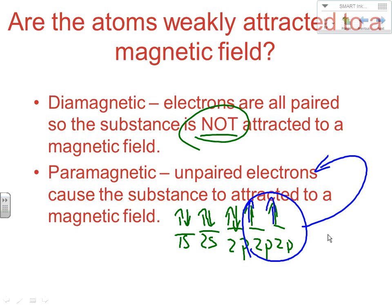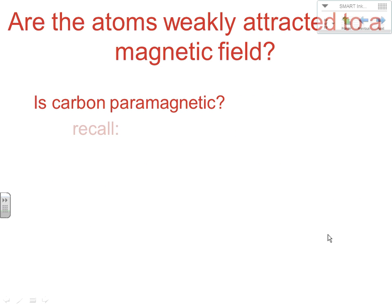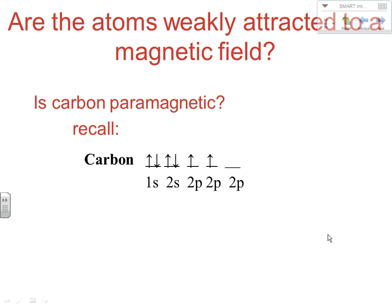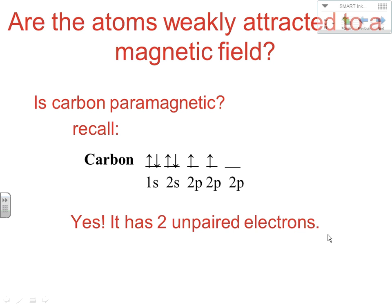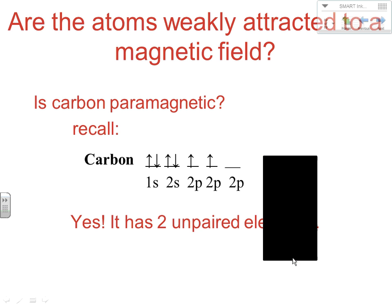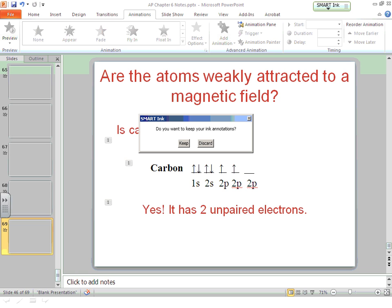How come some things are weakly attracted to magnetic fields and some aren't? It's about whether you have unpaired electrons in orbitals. Carbon, for example, also has two unpaired electrons in its 2p orbitals, so it's also paramagnetic — similar to oxygen. If you have unpaired electrons, you are paramagnetic; the more unpaired, the more paramagnetic. That ends our last set of notes over Chapter 6.